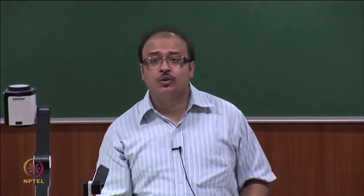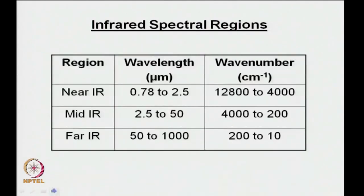Let us quickly look at the different infrared spectral regions. The near IR has wavelengths from 0.78 to 2.5 micron and wave numbers 12800 to 4000 cm⁻¹. The mid IR is 2.5 to 50 micron, or 4000 to 200 cm⁻¹. The far IR is 50 to 1000 micron, or 200 to 10 cm⁻¹. We will focus mainly on the mid IR.